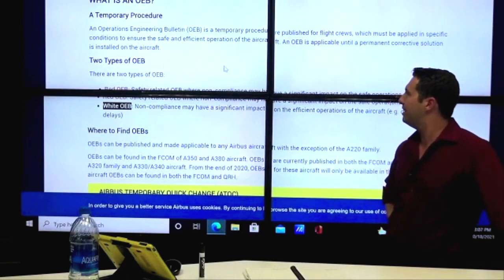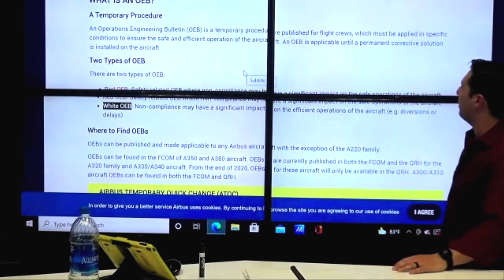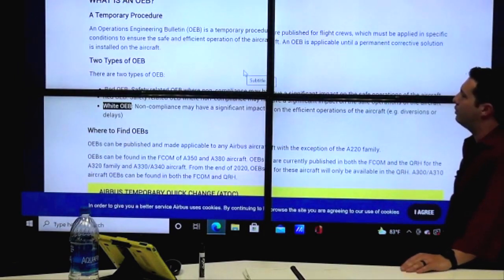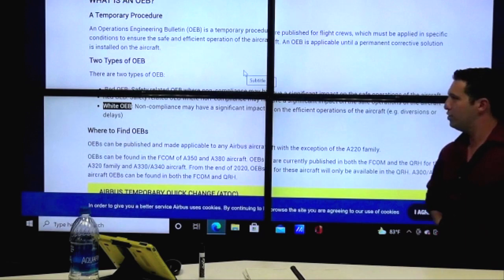So an OEB is a temporary procedure published for flight crews which must be applied in specific conditions to ensure the safe and efficient operation of the aircraft. So it also goes on to say an OEB is applicable until a permanent corrective solution is installed on the aircraft.